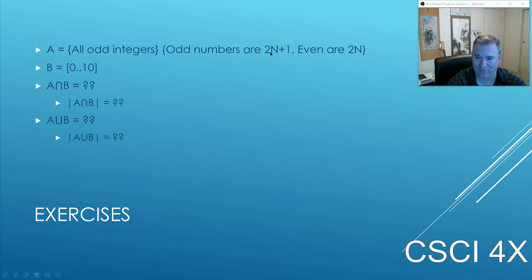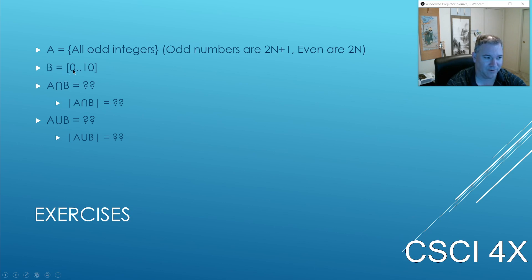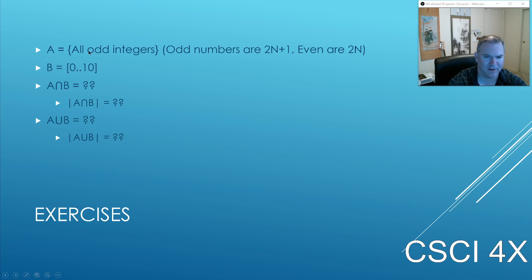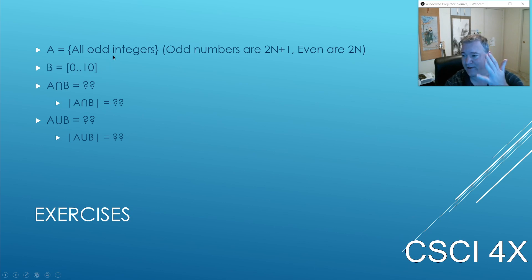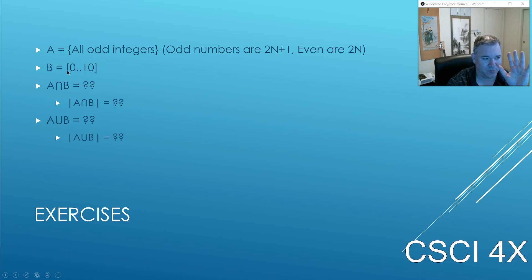A is all odd integers — odd integers are of the form 2n+1. Even numbers are of the form 2n. Zero is even, not odd — there's no integer you put into 2n+1 that gives you zero, but putting zero into 2n gives you zero. B is zero to 10. The intersection is all odd integers also between zero and 10: {1, 3, 5, 7, 9}. The size of the set is five — there are five odd numbers between zero and 10 inclusive.